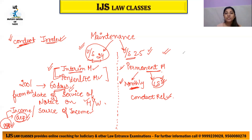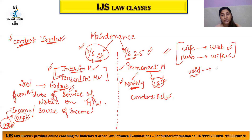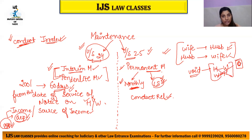Both the wife and the husband can claim maintenance from each other. Now, a question arises about void marriage. In a void marriage, in the eyes of law, there is no husband and wife — the marriage never happened. So do void marriage spouses have any rights against each other?